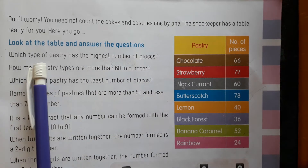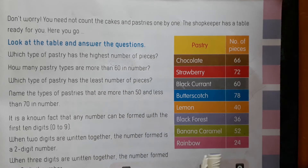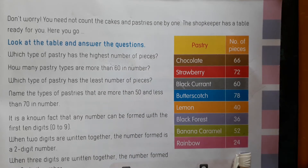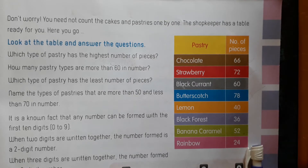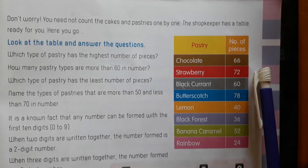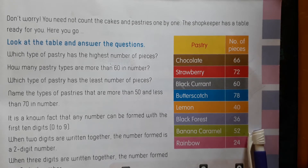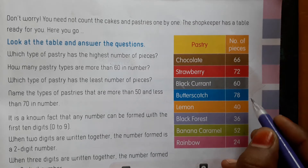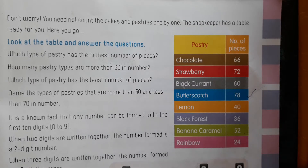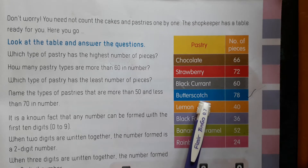Which type of pastry has the highest number of pieces? Look at the number of pieces children. Which number is the bigger number? 62, 72, 60, 78, 40, 36, 52, 24. Which one is the bigger number here? 78. So butterscotch has the highest number of pieces.